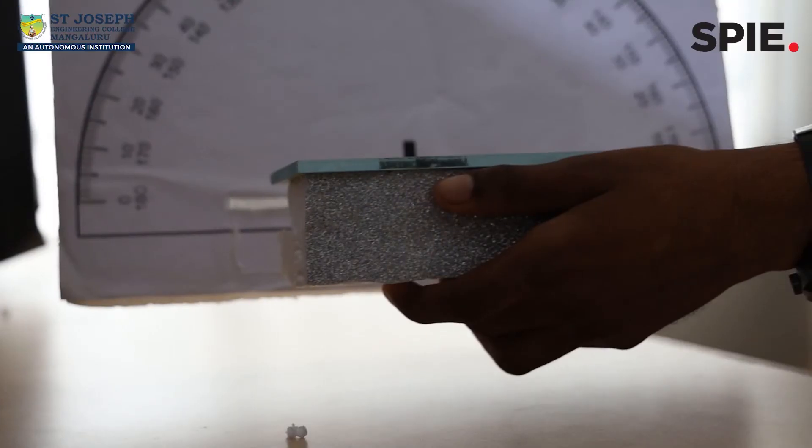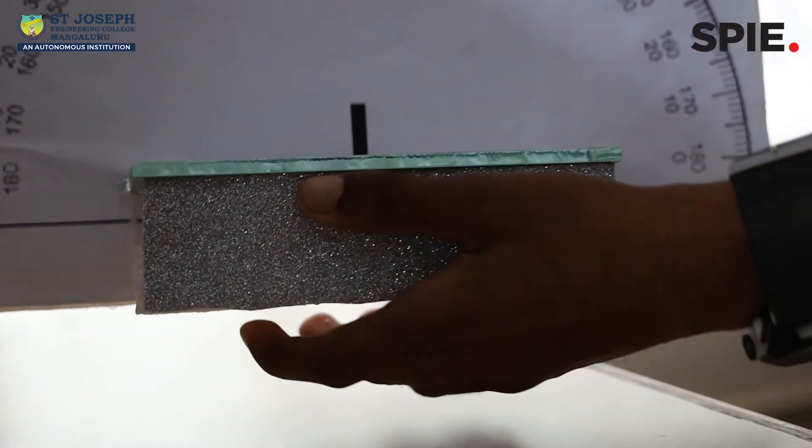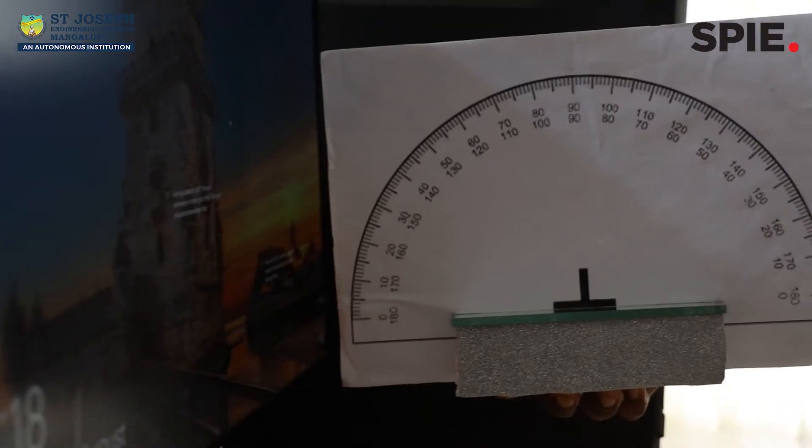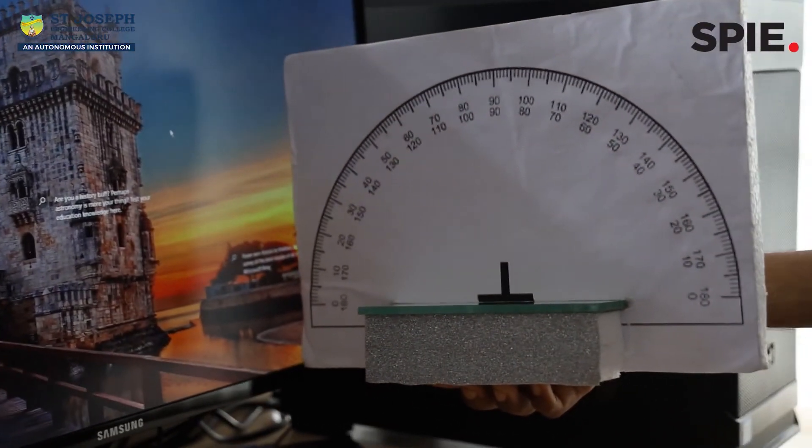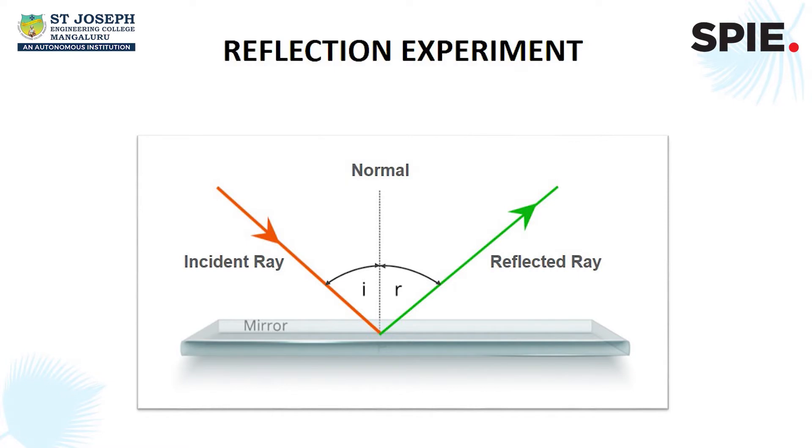The mirror acts as a smooth surface which reflects the light at the same angle as they arrive. The working principle is such that when light is directed onto the surface of a mirror at an angle, it reflects back into the space at another angle.